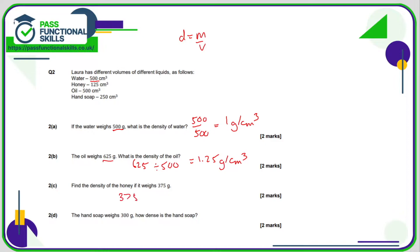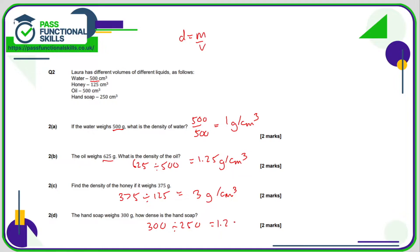The honey is 375 divided by 125, which works out as 3 grams per cubic centimetre. Notice how we're speeding through them now - the first one made us think a little bit, but now we've got the formula sorted out, we're flying. The hand soap is 300 divided by 250, and that is 1.2 grams per cubic centimetre.